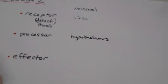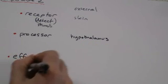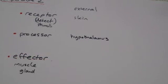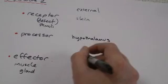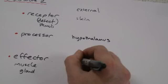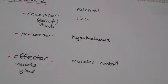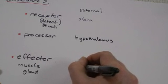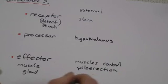The processor is an area of the brain called the hypothalamus. And the effectors will either be a muscle or a gland. So in the case of temperature control, the muscles might be the muscles that control your hair standing up.